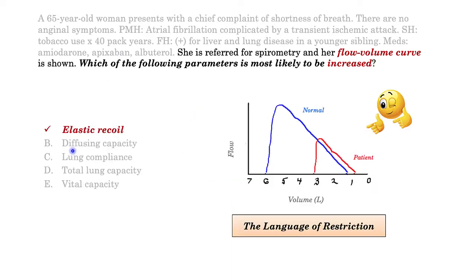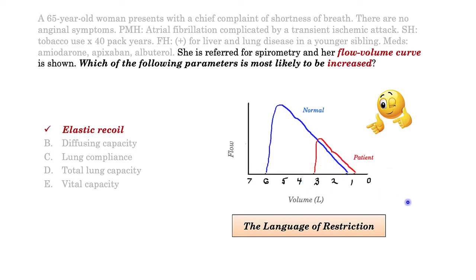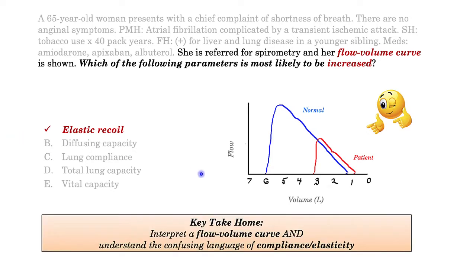So how do we interpret the curve? This is a restrictive curve. We're going to look here at the residual volume, and the patient's volume moved down — decreased — which is the language of restriction. So in terms of which parameter increases in the setting of restriction, the answer is elastic recoil.